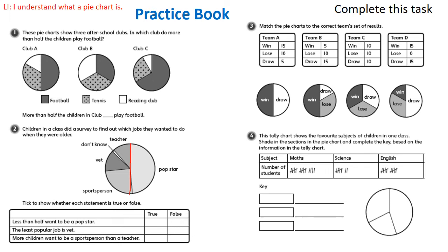So how I would start doing this is I would actually look at team D first. So team D didn't lose any, so their pie chart is only going to be split into two sections. Can you find that one? Then I'd look at team C. I chose team C because they have an equal amount in each of the sections on the pie chart. So which of the three pie charts that are left is split into three equal sections?